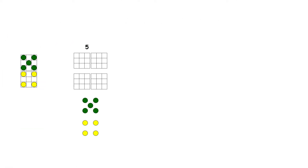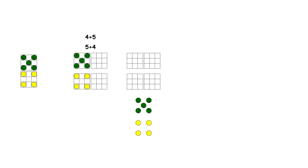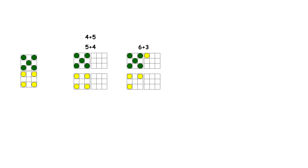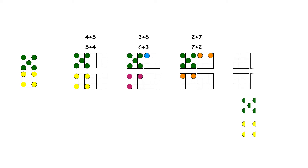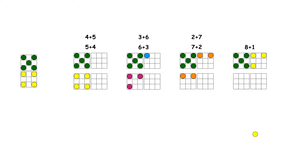The number 9. 9 is the same as 5 and 4, and 4 and 5. 9 is the same as 6 and 3. 9 is the same as 7 and 2, and 2 and 7. And 9 is the same as 8 and 1, and 1 and 8.